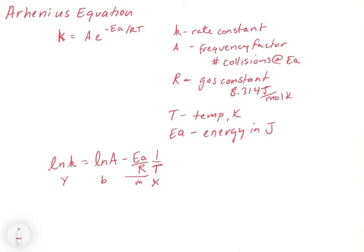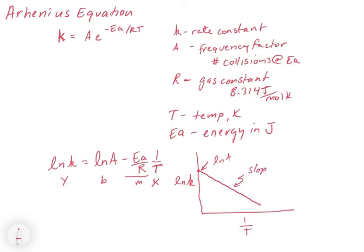So if you make a plot with the natural log of the rate constant on the y-axis and 1 over T on the x-axis, you're going to get a straight line — a straight line with a negative slope. The y-intercept is going to be the natural log of A, and the slope is going to be equivalent to minus Ea over R.